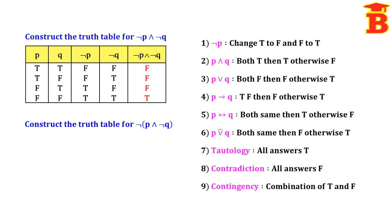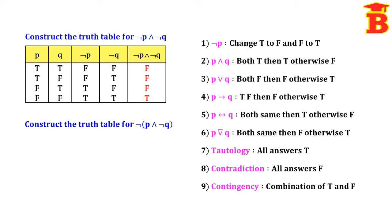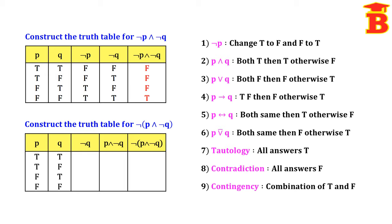Next, construct the truth table for negation of (P AND NOT Q). Here also there are two statements P and Q, so four possibilities: TT, TF, FT, FF. In the expression we have NOT Q, so write NOT Q in the table, then take bracket P AND NOT Q, and finally the negation of (P AND NOT Q).